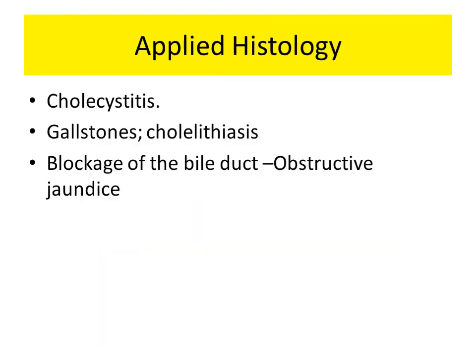Coming to applied histology, the gallbladder is very commonly prone to infection and inflammation, which we call cholecystitis. This commonly happens in fat, fair, fatty females, and it causes severe pain for which the gallbladder has to be removed. The gallbladder is also prone to stones, which we call cholelithiasis. Many times, due to external or internal compression, there can be blockage of the bile duct, preventing bile from reaching the second part of the duodenum, resulting in what we call obstructive jaundice.